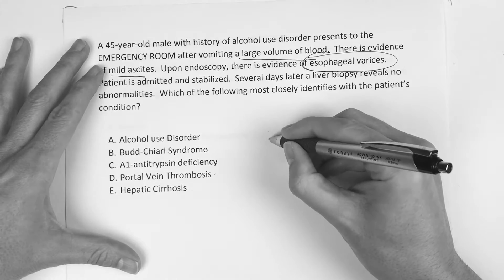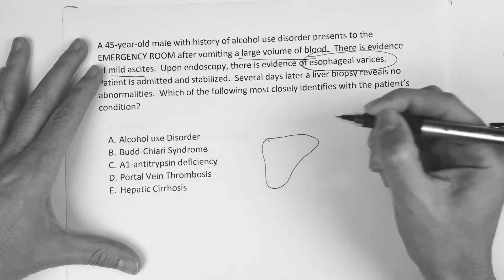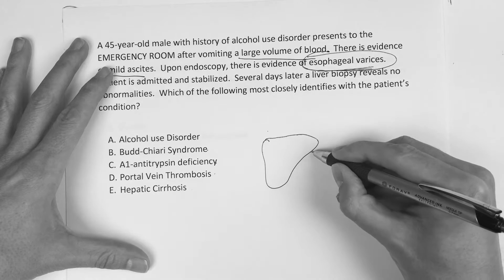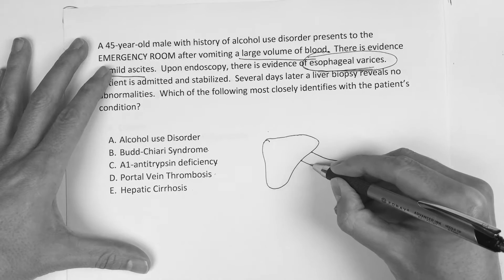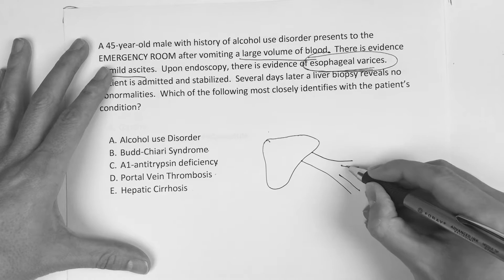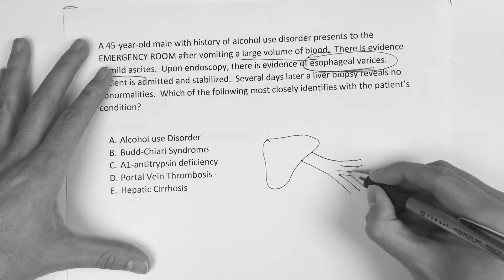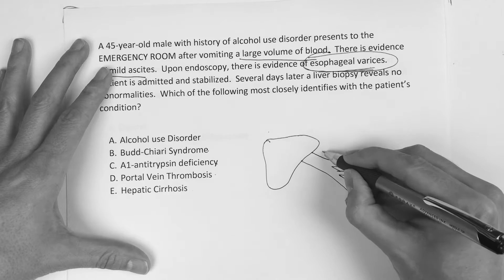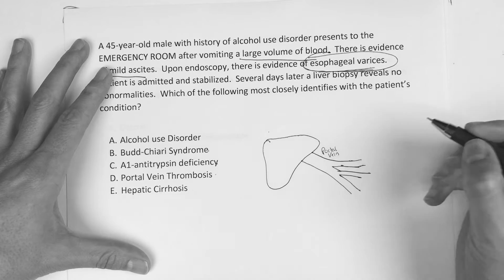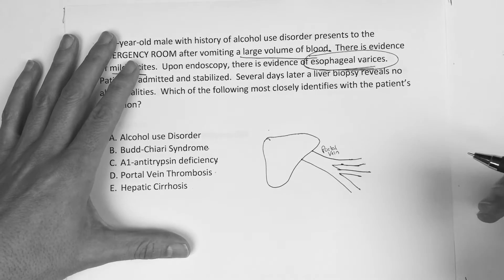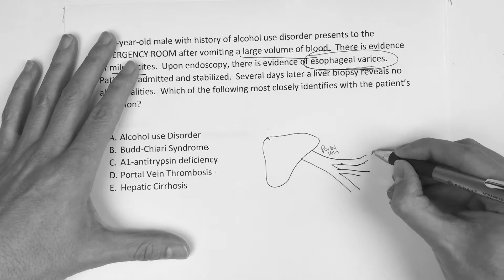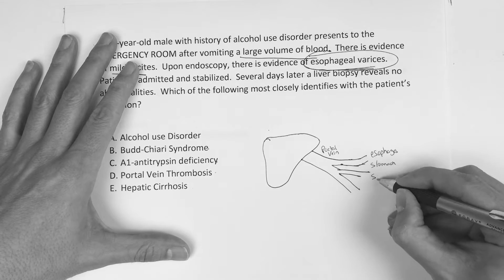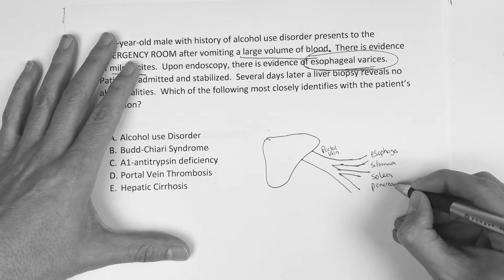So we're in the liver area, and we've got to understand the mechanism of esophageal varices. Coming into the liver, you have blood that comes in through the portal vein — you've got to know this. Things drain back to the liver via the portal vein: from the esophagus, stomach, spleen, pancreas, and intestines. The list goes on and on.